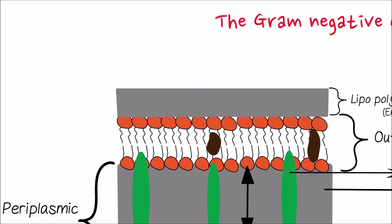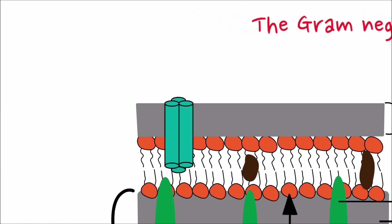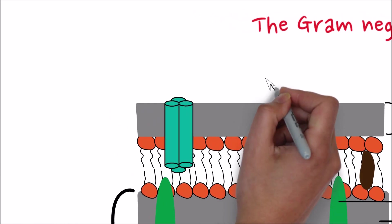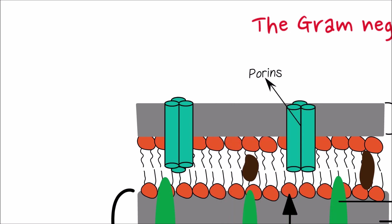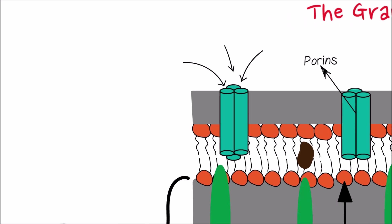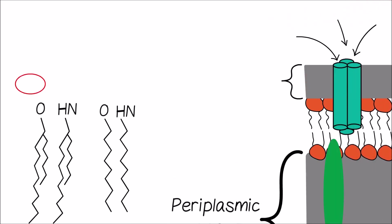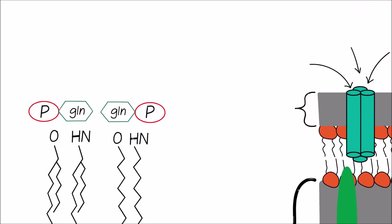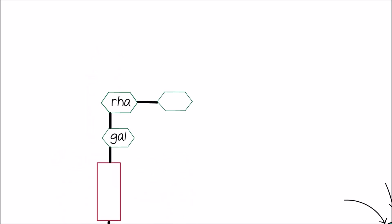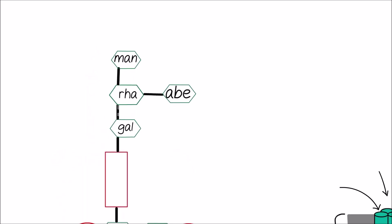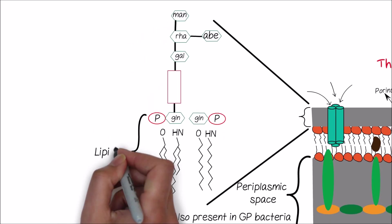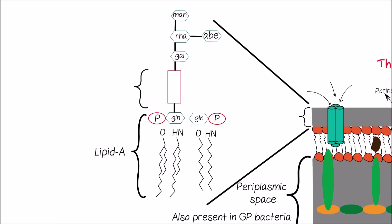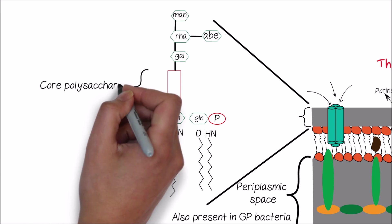The other proteins present in the outer membrane are porins. Porins form a narrow channel and allow different molecules to pass through. The lipopolysaccharides are complex molecules composed of three regions: Lipid A, core polysaccharide, and O antigen.